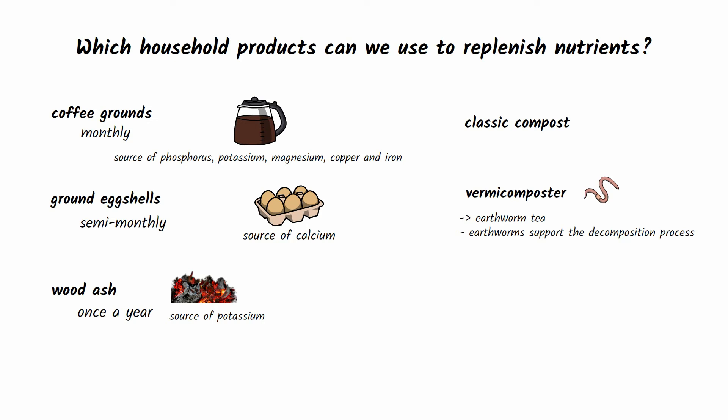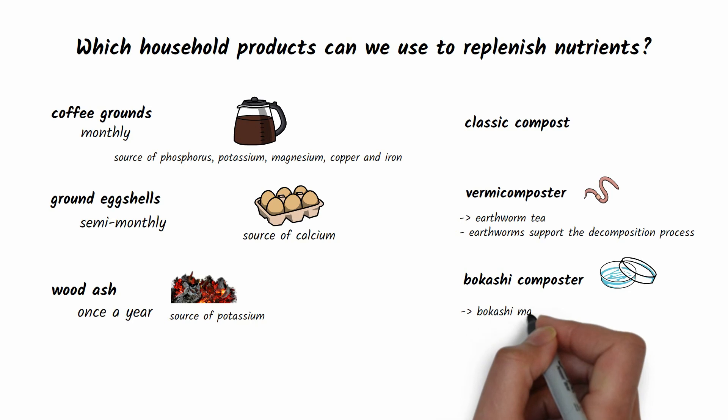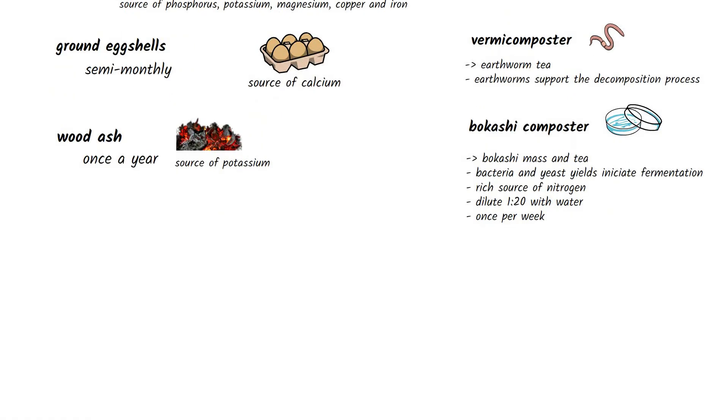Classic composting, vermicomposting from which we obtain the so-called worm tea by decomposing earthworms, or bokashi composting from which, thanks to a mixture of bacteria and yeast, yields through fermentation a nitrogen-rich bokashi mass and tea. It should be diluted with water in a ratio of 1 to 20 and added to the plants once a week.